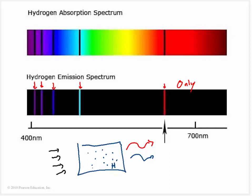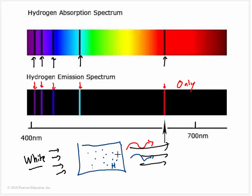If I were to shine some white light - all colors of the rainbow - into this hydrogen, it turns out that it's going to selectively absorb those same exact colors, but none of the other wavelengths. The rest of the light would actually go ahead and make it through the hydrogen gas. We have special names for this: what hydrogen absorbs is the absorption spectra, and what hydrogen emits is the emission spectra.